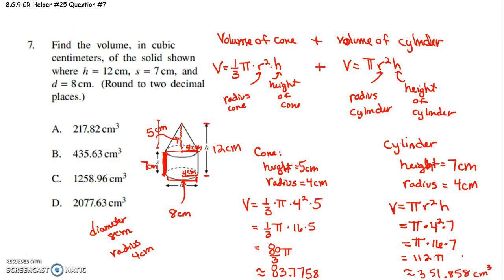we get approximately 351.858. This would be centimeters cubed. Volume is cubic centimeters. Centimeters cubed. All right. Now, we've got to add them.